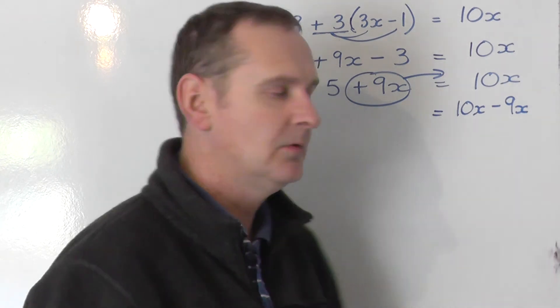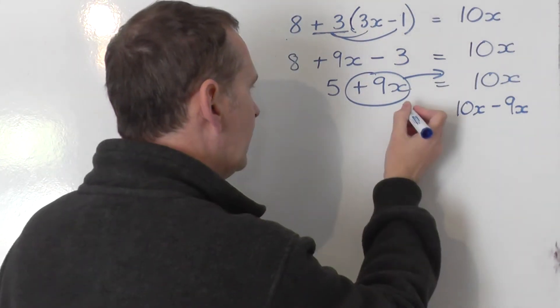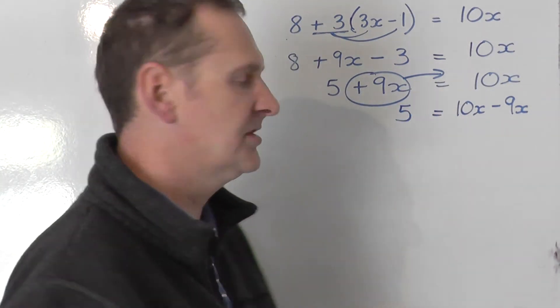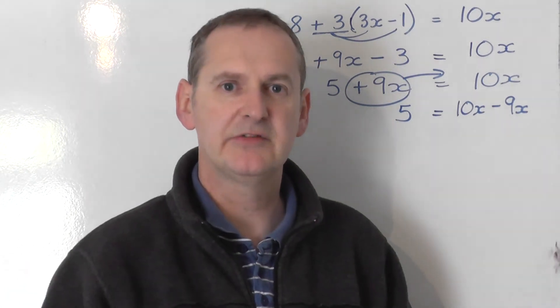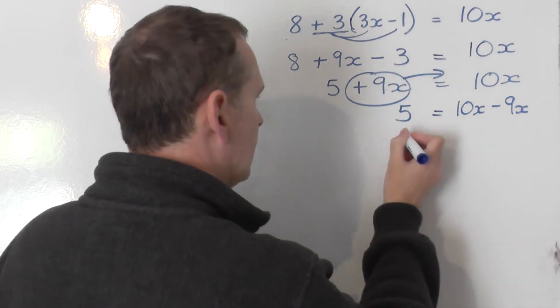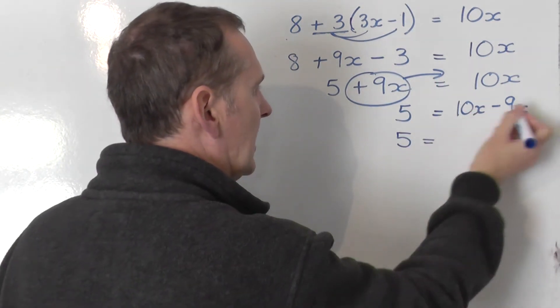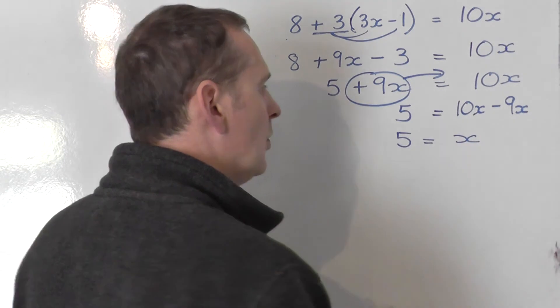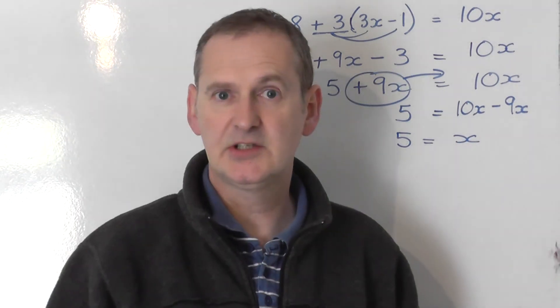Now the number term, well there's only one of them, is the number 5. That doesn't swap sides, it doesn't swap sign, it remains as positive. So I just put 5 down. And now we tidy things up. 5 on the left and we work out 10x take away 9x. Well that's just 1x. And so that's the answer.